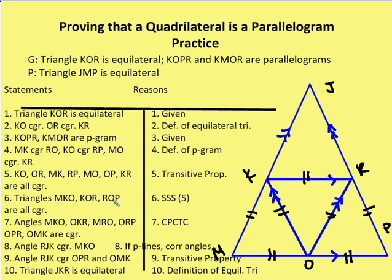Now I'm going to say that triangles MKO, KOR, and ROP are all congruent by side-side-side. Then I say that angles MKO, OKR, MRO, ORP, OPR, and OMK are all congruent by CPCTC. I marked all these angles up. Then I say angle RJK is congruent to MKO because if I have parallel lines, corresponding angles are congruent. And then angle RJK is congruent to OPR and OMK by the transitive property.